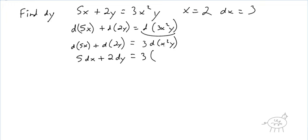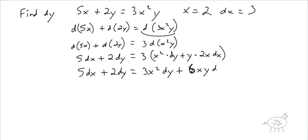And then, that's equal to 3. And, we're going to use the product rule. It's the first times the derivative of the second. So, times dy. Plus the second times the derivative of the first. Times 2x dx. Right? Okay, hopefully you guys are good with that. Alright, and let's, if I, let's combine, or distribute that 3. 5dx plus 2 dy is equal to 3x squared dy plus 6xy dx.